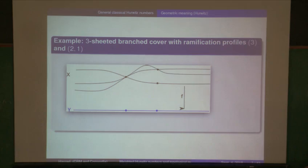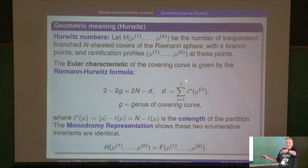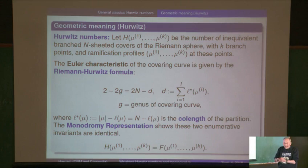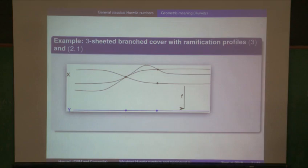There's an easy connection between the two. This is a stupid illustration copied off the net — an illustration of a branched cover. It looks like it's three-sheeted with one branch point collapsing to a single point, and this would be an example of a simple ramification point where two sheets are collapsing to one and the other isn't. If you look at the Riemann-Hurwitz formula, which gives you the genus of the covering, it's what would be if unbranched minus the defect — the sum of the co-lengths.